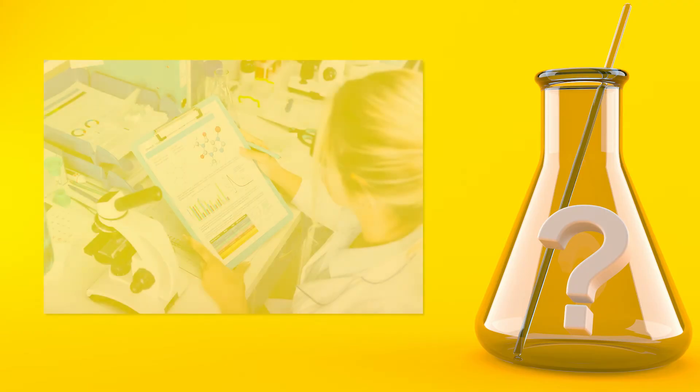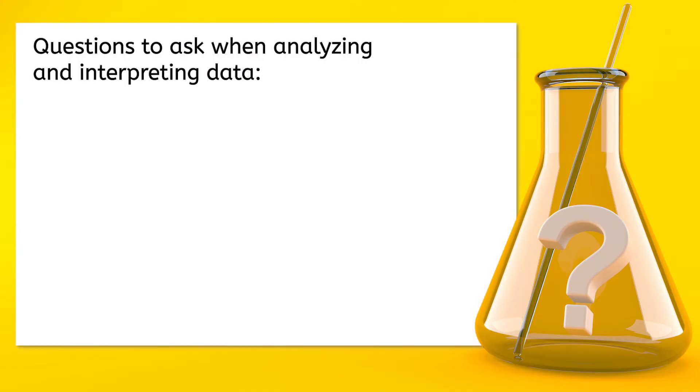Often in chemistry, the data collection, analysis, and interpretation is the most important aspect of the scientific process. When working on labs or writing scientific papers, it is often included in the discussion part of the report. Some questions you should ask yourself when analyzing and interpreting your data include: